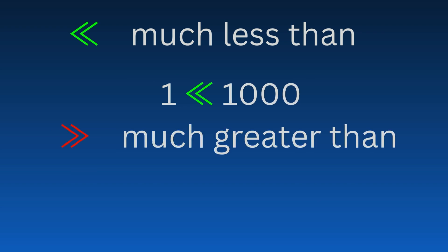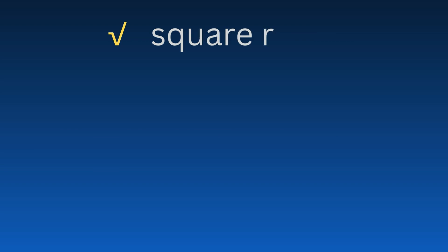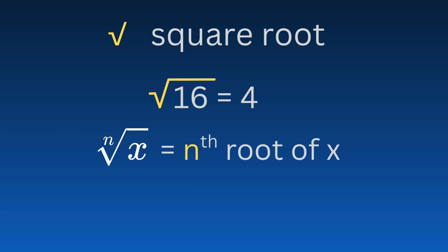Using two less than signs gives the much less than symbol, and likewise, two greater than signs mean much greater than. The root symbol represents the square root of a number. When an integer greater than two is written as a left superscript, it indicates the nth root of that number.